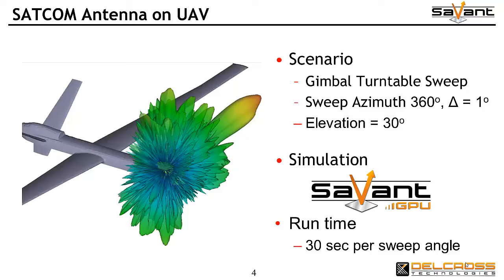Savant employs the use of graphics processor units, or GPUs, to realize performance gains through parallel processing. In this case, a GPU was used on a consumer-grade video graphics adapter on a workstation with average performance capability. Each 3D radiation pattern is composed of over 65,000 observation points and required about 30 seconds at each 1 degree azimuth position.